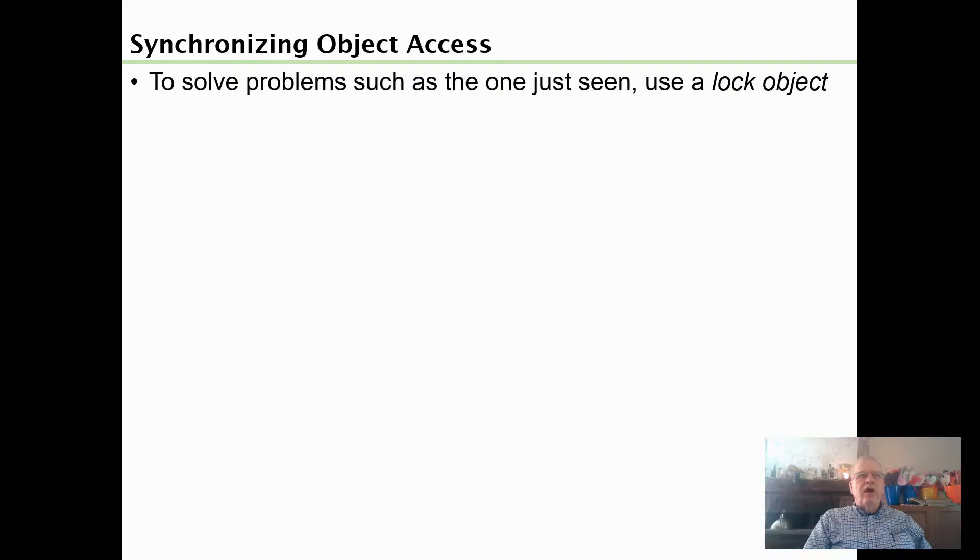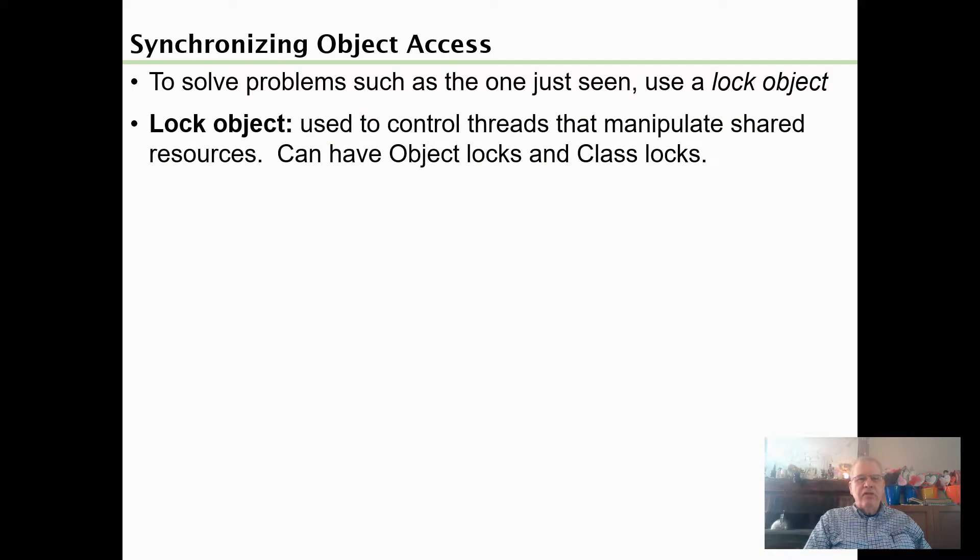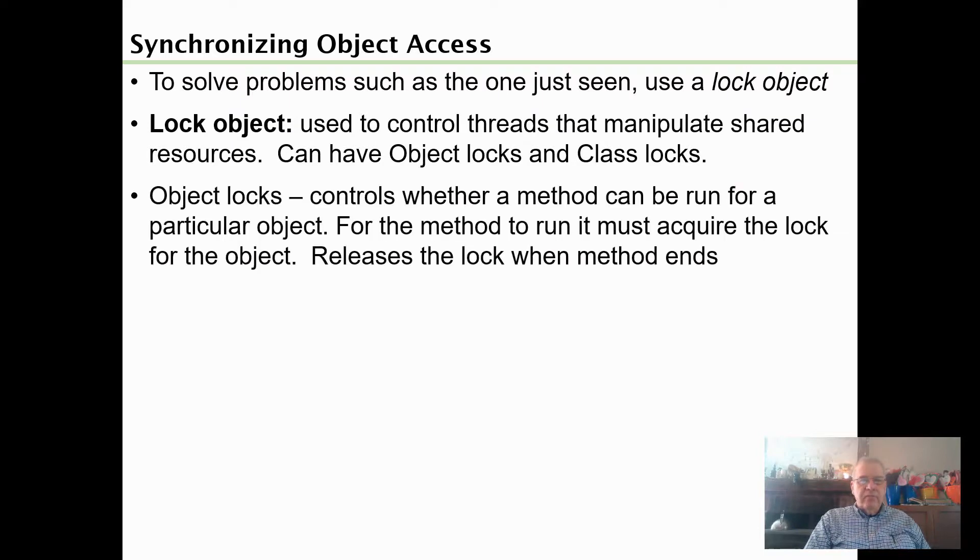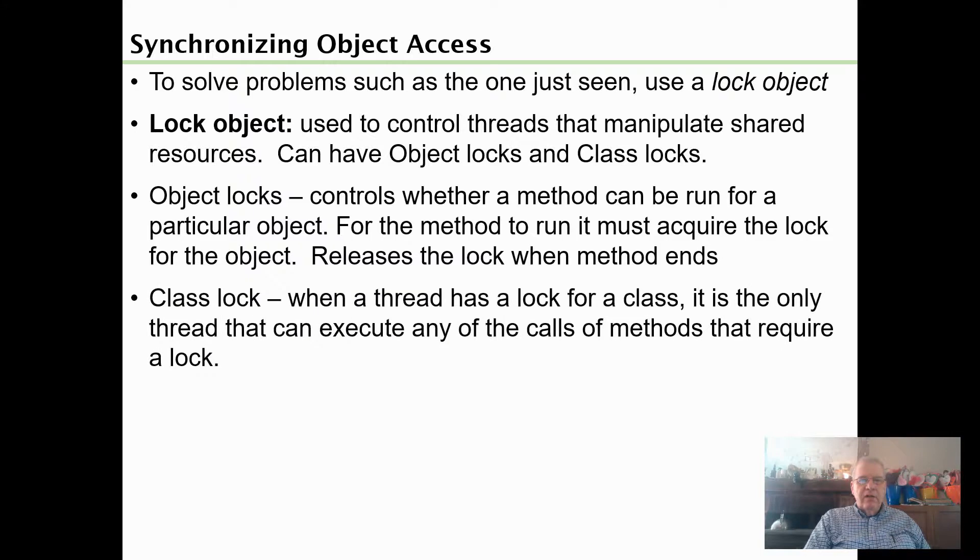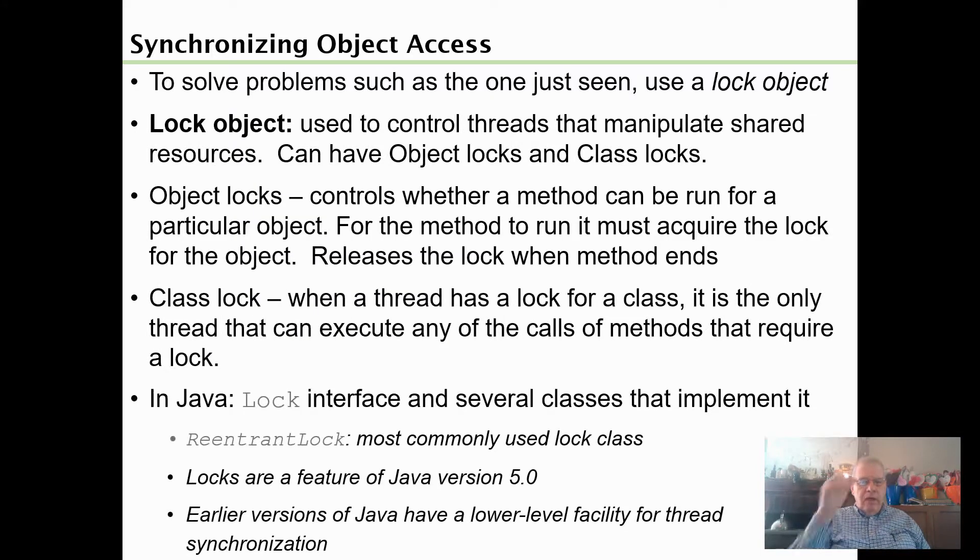To prevent a race condition, we use a lock object. A lock object is just another kind of object. We can have object locks and class locks. An object lock locks us out of using multiple threads on the same object, whereas a class lock locks us out of using the same thread or different thread on the same class. We are going to talk about the object locks. There's the definition of them both.